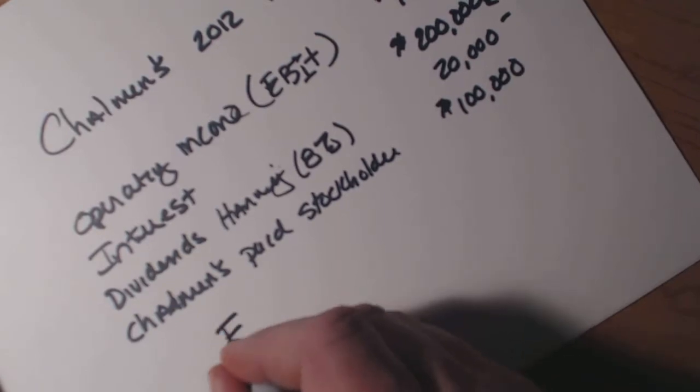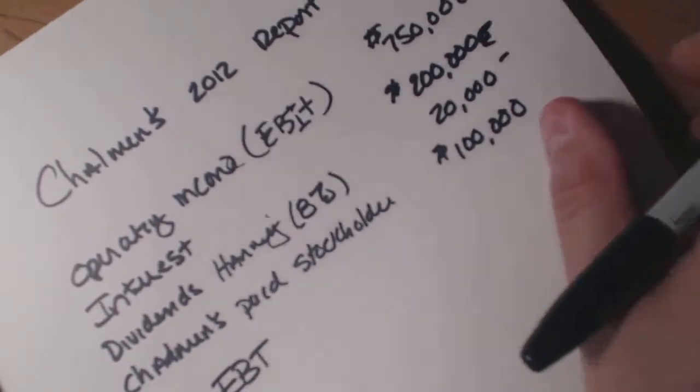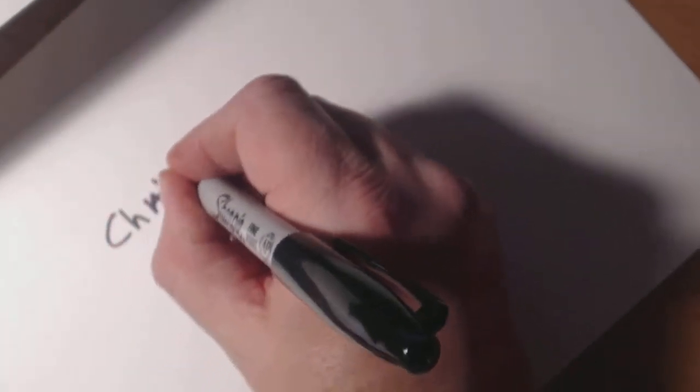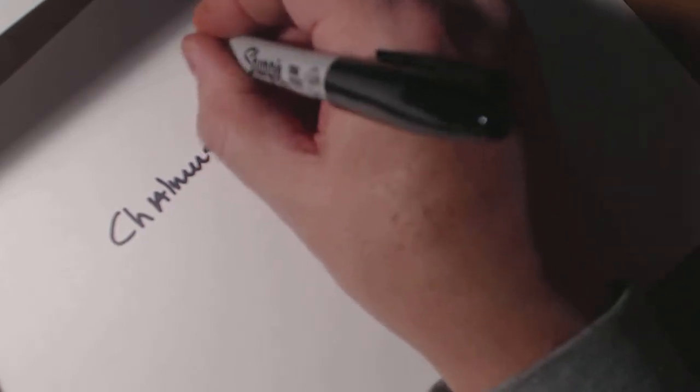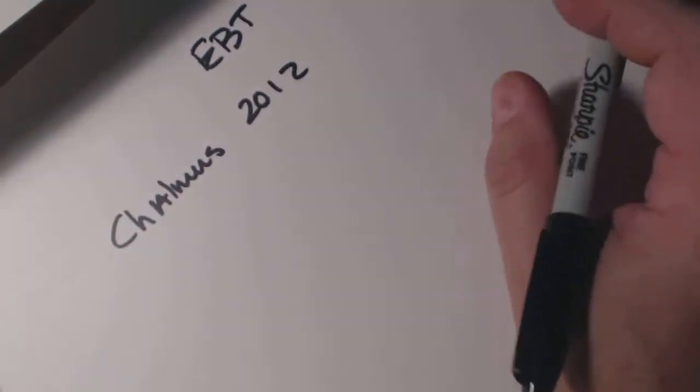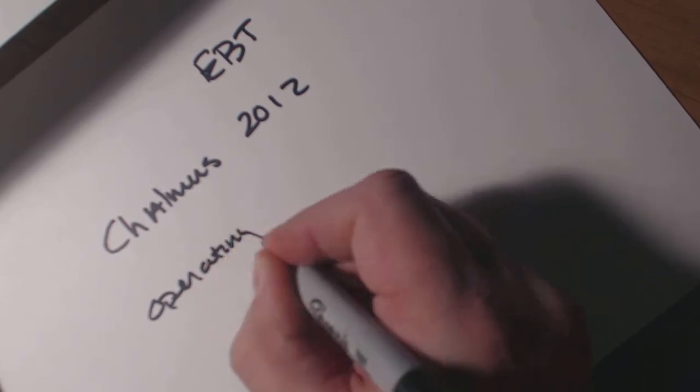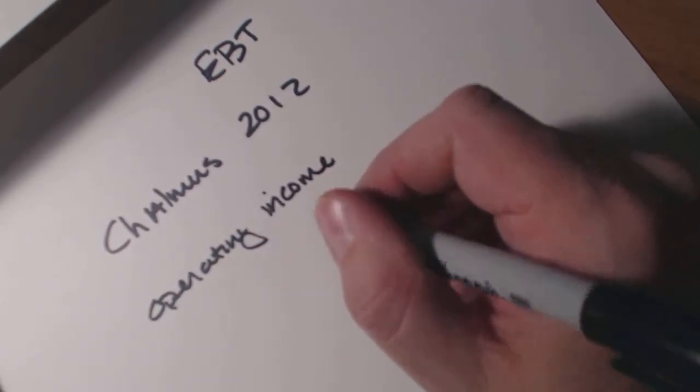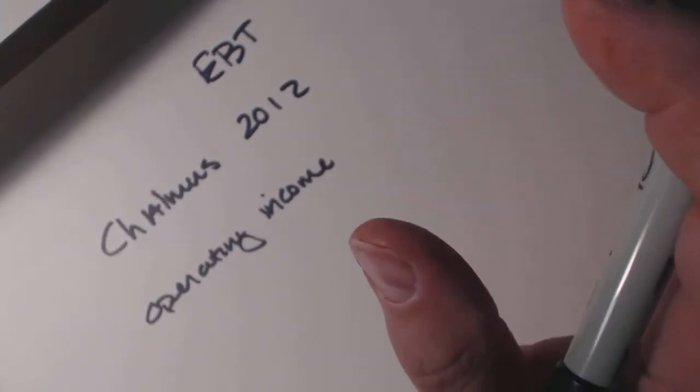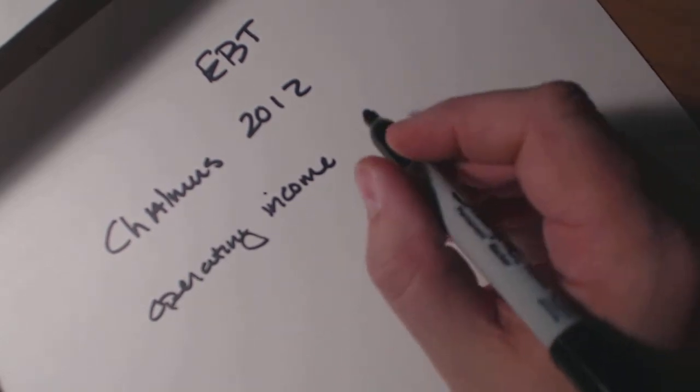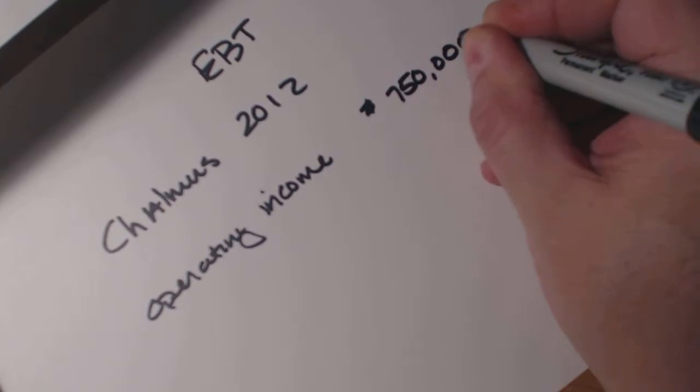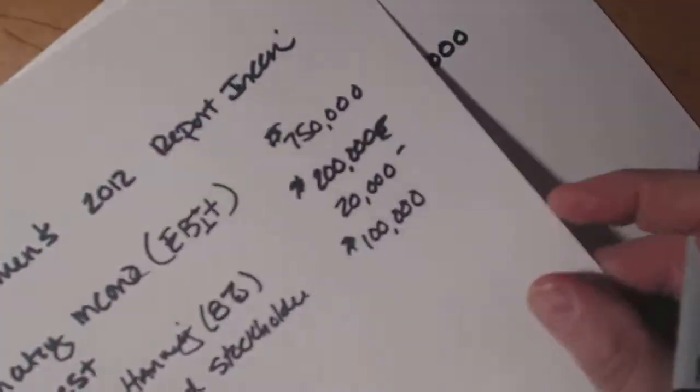Well, what we want to do is we want to calculate for the EBT, which would be earnings before taxes. So Chalmers, as we started looking at, this is Chalmers in 2012, we are solving for EBT, earnings before taxes. So we're going to take out the interest here. We start off with operating income. This is just operating income, not including the dividends that we received. So we are looking at the operating income of $750,000.